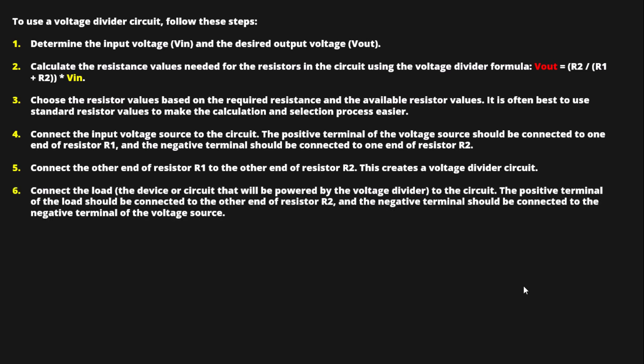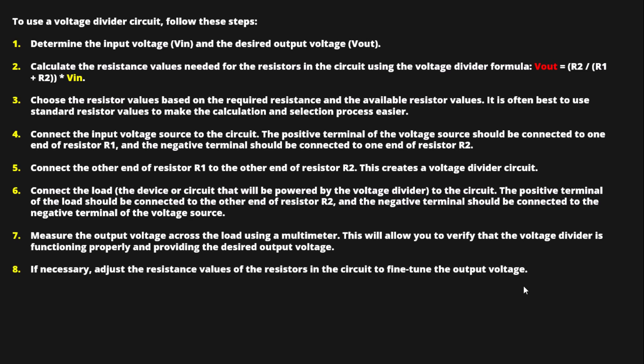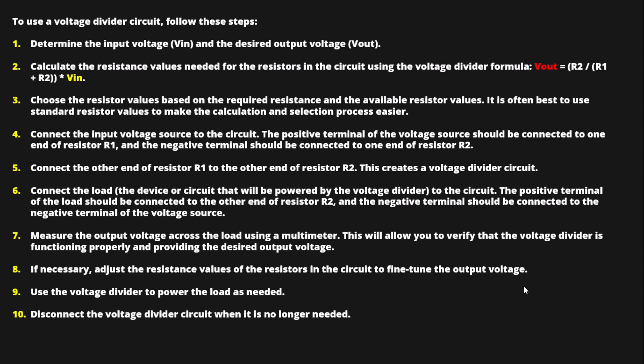Connect the load — that is, the device or circuit to be powered — to the voltage divider. The positive terminal of the load should be connected to the other end of R2, and the negative terminal to the negative terminal of the voltage source. Measure the output voltage across the load using a multimeter to verify the voltage divider is functioning properly. If necessary, adjust the resistance values to fine-tune the output voltage, then use the voltage divider to power the load as needed. Disconnect the circuit when it is no longer needed.